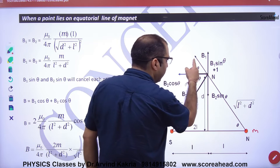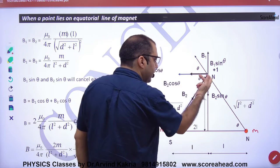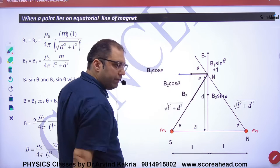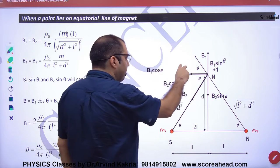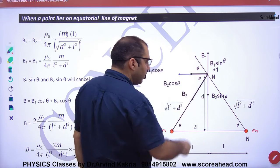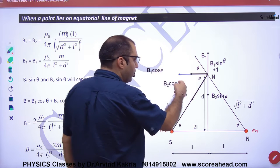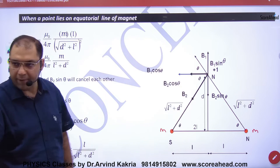This is B1. And if this is theta, this is theta with alternate, this is theta corresponding. Two components: B1-cos theta and B1-sin theta. Two components: B2-cos theta and B2-sin theta.